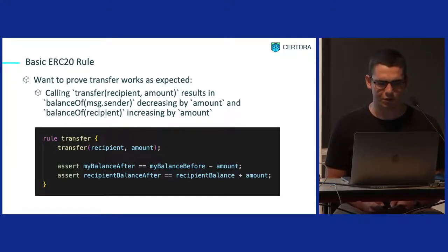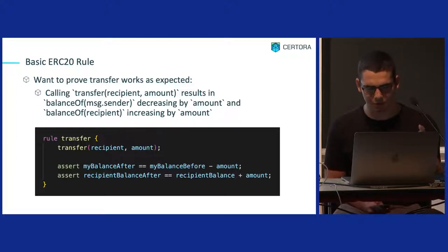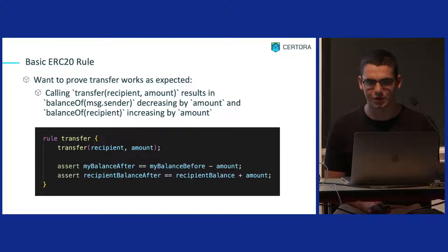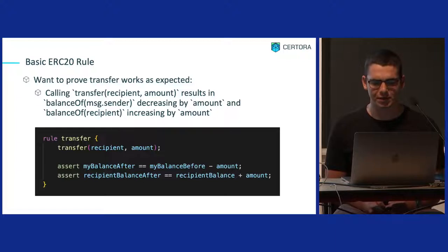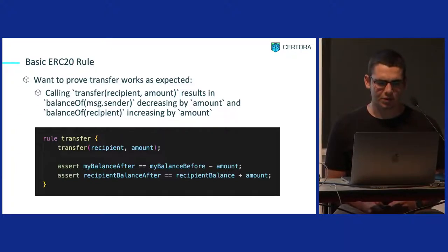Let's start with a basic ERC-20 rule. We want to prove that calling transfer will result in the balance of the message sender decreasing by amount and the balance of the recipient increasing by amount. We have a picture of this rule. You call the transfer function in the ERC-20 contract, and then you assert some things at the end — that your balance decreased and the recipient's balance increased.